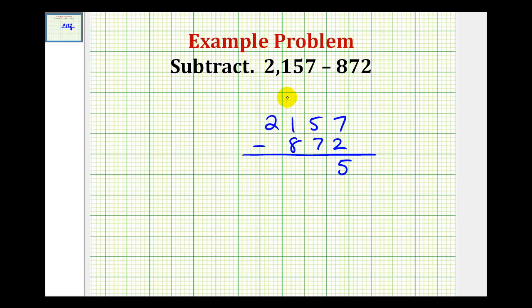So if we borrow 1 from the hundreds, we'll have a 0 in the hundreds column. And because a hundred is equal to 10 tens, we add 10 to the tens column. So now we have 15 in the tens column.